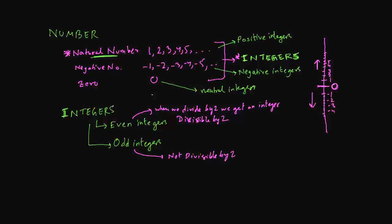Some examples: 2 divided by 2 gives 1, which is an integer; 4 divided by 2 gives 2, which is an integer. So 2, 4, 6, 8, 10 are even integers. Remember, even 0 is an even integer because 0 divided by 2 is 0, and 0 is an integer. The odd integers are 1, 3, 5, 7, 9 and on and on.